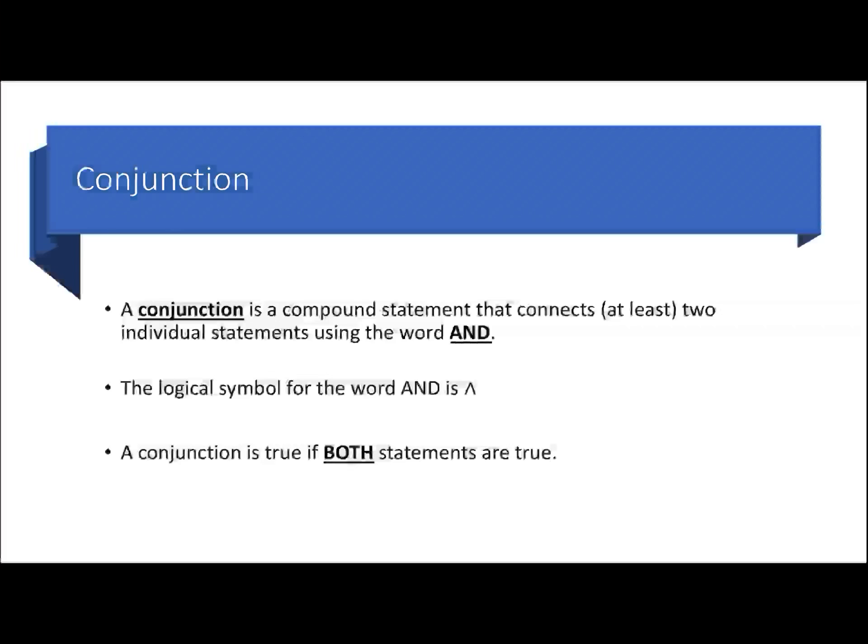A conjunction is a compound statement that connects two statements using the word 'and.' The logical symbol for 'and' is an upside-down V. A conjunction is true only if both individual statements are true. A real-world example: logging into a website requires the username to be correct AND the password to be correct. If it were 'or,' that would be a very insecure way to protect privacy, since anyone with just your username could log in.